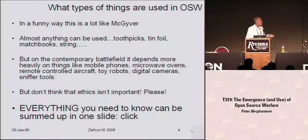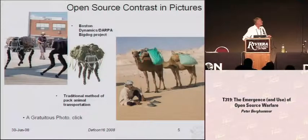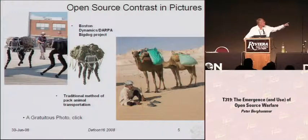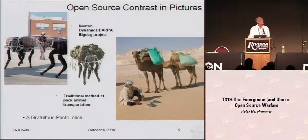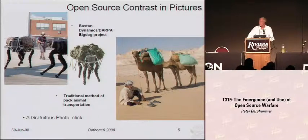To get us started, I want to show a slide that will tell you everything you need to know about open source warfare. It's funny in a way and tragic-comic in another, yet deadly serious at its most fundamental level. What we're looking at on the left is the Big Dog project done by DARPA, and the center picture was done by a company called Boston Dynamics, who work with DARPA to provide a type of pack mule automation system.